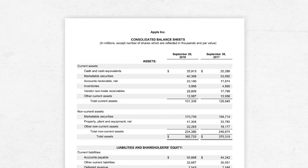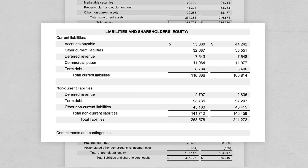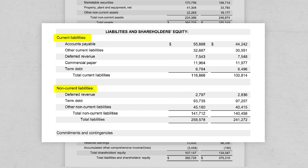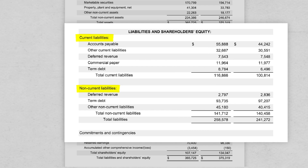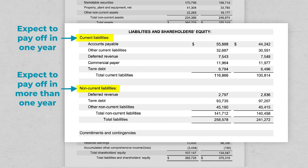Back to Apple's balance sheet. On the liabilities side, it has two sections: current and non-current. All you need to know is that current means that we expect to pay it off in one year, and non-current means we expect to pay it off in more than a year.